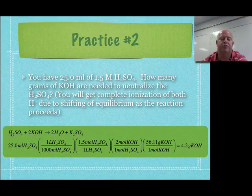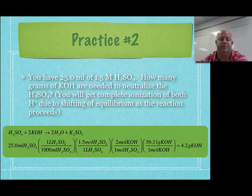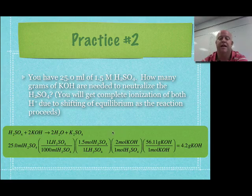Here's the answer key. First, make sure we have a balanced chemical equation. The mole ratio between sulfuric acid and potassium hydroxide is not 1-to-1 — it's 1-to-2, so we have to factor that in. We start with milliliters of sulfuric acid, convert to liters, use the concentration to get moles, then apply the 1-to-2 mole ratio. The last step asks for grams, so using the molar mass of KOH you get the answer: 4.2 grams of potassium hydroxide are needed to neutralize that solution.